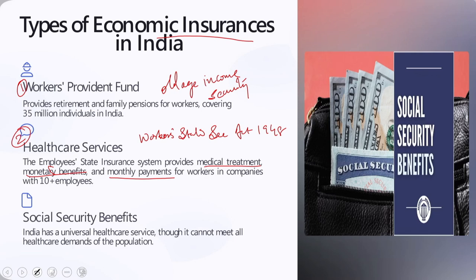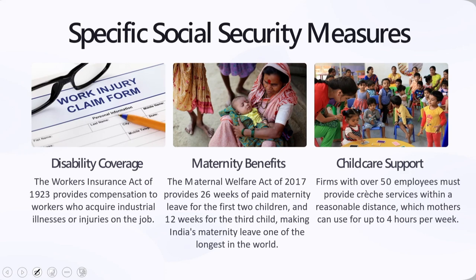When looking into other social security benefits, India has universal healthcare, though it cannot meet all demands. Specific measures include disability coverage, maternity benefits, and childcare support. The Workers Insurance Act of 1923, often referred to as the Workman's Insurance Act of 1923, provides compensation to workers who acquire industrial illness or injuries on the job. A person who acquires an industrial illness is regarded as having been hurt on the job and is entitled to compensation from his or her employer.